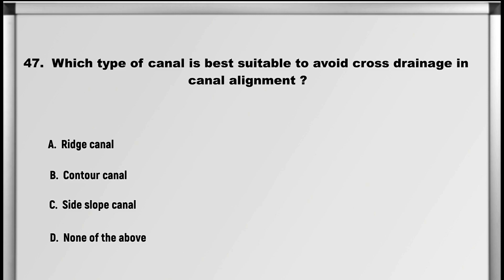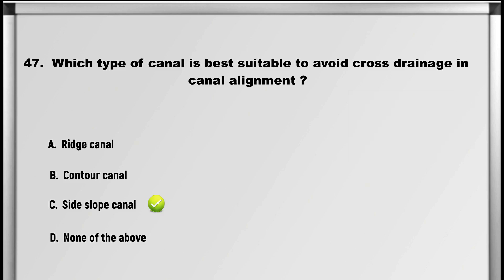Moving on to question number 47: Which type of canal is best suitable to avoid cross-drainage in canal alignment? A. Ridge canal, B. Contour canal, C. Side slope canal, D. None of the above. Answer: C. Side slope canal.